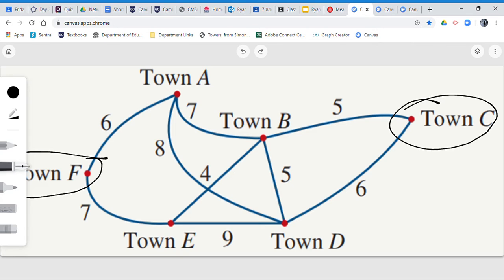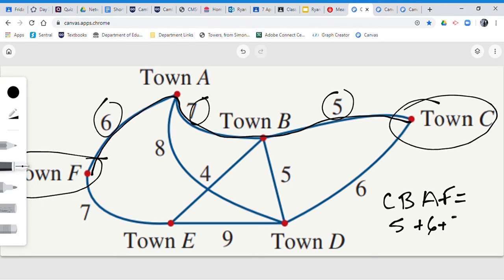To begin you can list a couple different options. There's this option here where you go from town C through town B. So that's C to B to A to F. Now you add up the weights of all your edges. So with C to B to A to F, I believe that's 5 plus 6 plus 7, which is going to give you a total of 18 kilometers. So there's your first one.